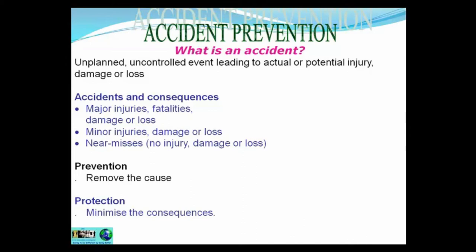Accidents and consequences: fatalities, major injuries, damage or loss; minor injuries, damage or loss; and near misses, where there's no injury, damage or loss. All near misses must be reported in the accident book, or some companies have their own near miss documents. If a near miss is something where you almost have an accident but just manage to avoid it, you need to record it, because you might be lucky but the person behind you might not be. How can we prevent the accident? Can we remove the cause, protect from the consequences, or minimize the consequences?